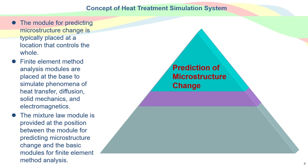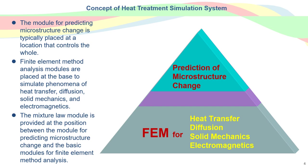This figure shows a concept of the heat treatment simulation system. This simulation uses a computational model created from a mathematical model of phenomena due to heat treatment. The module for predicting microstructure change is typically placed at locations that control the analysis modules by the finite element method. The FEM modules simulate phenomena related to heat transfer, diffusion, solid mechanics, and electromagnetics. The mixture rule module is provided at the position between the predicting microstructure changes and FEM modules.